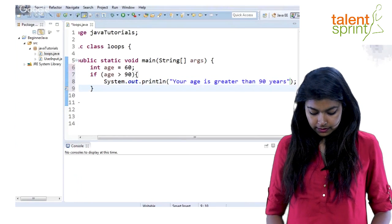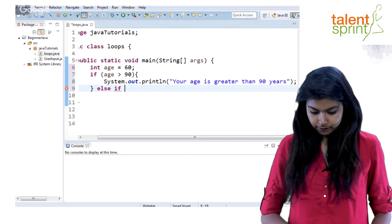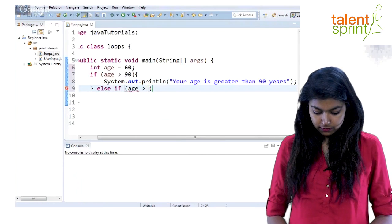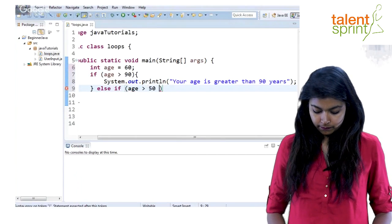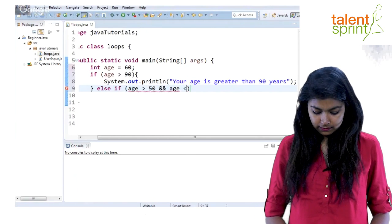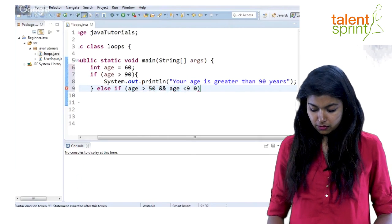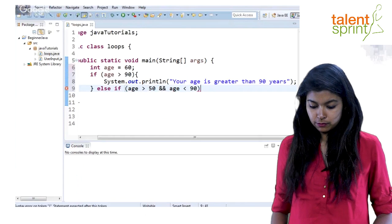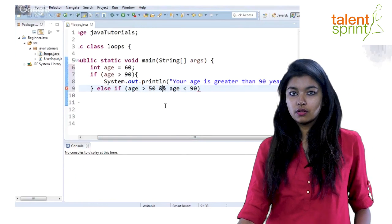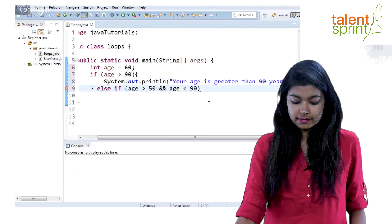Now let's say else-if age is greater than 50 and age is less than 90. So when the age is between 50 to 90 what do we have to do? Right here we have used the and logical operator to combine two conditions that we have to check in this else-if statement.